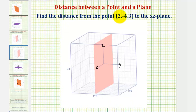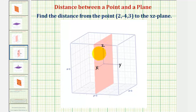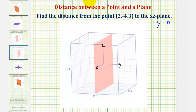We want to find the distance from the point (2, -4, 3) to the xz plane. There are a couple ways to approach this. By looking at the graph of the xz plane, notice how for any point on this plane the x and z coordinates can be any real number, but the y coordinate must be zero. So if we recognize that the equation of the xz plane is y = 0, we can determine the distance from this point to the xz plane by analyzing just the y coordinate.